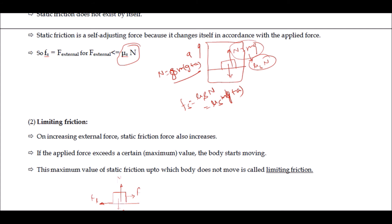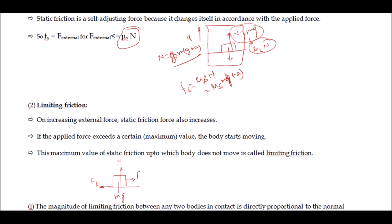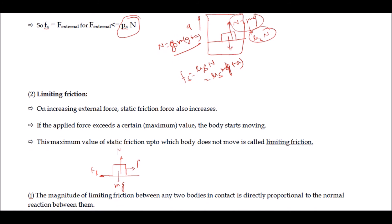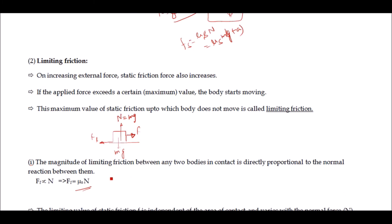If we increase the external force, the value of static friction can reach up to a maximum value called limiting friction. On increasing external force, the static frictional force also increases. If the applied force exceeds a certain value, the body will start moving — as we have seen in daily life. The frictional force can act up to a certain maximum value, called limiting friction. This maximum value of static friction up to which the body does not move is the limiting friction, and its value equals μsN, where μs is the coefficient of static friction.